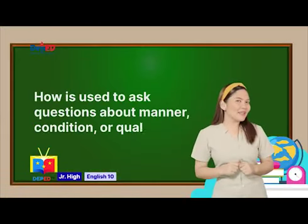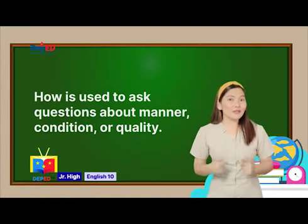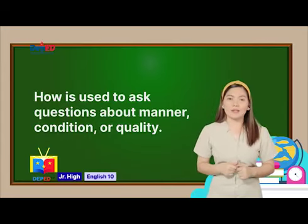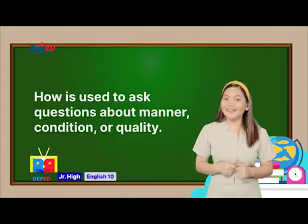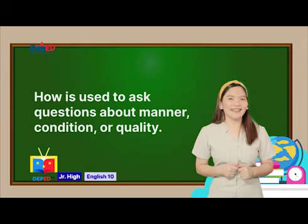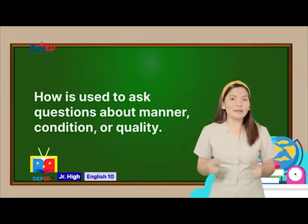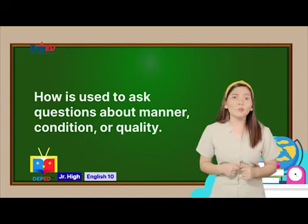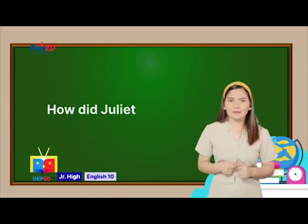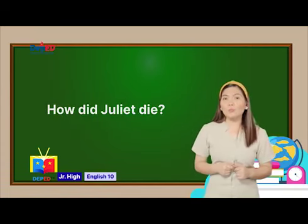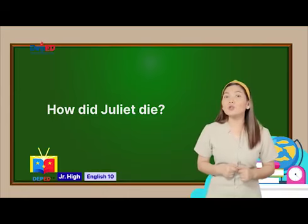Last but not the least, HOW. We use this to get answers to questions about manner, condition, or quality. This commonly means in what way or to what extent. Let's talk about Romeo and Juliet — how did Juliet die? Juliet died by suicide. She stabbed herself after waking to find Romeo's dead body.